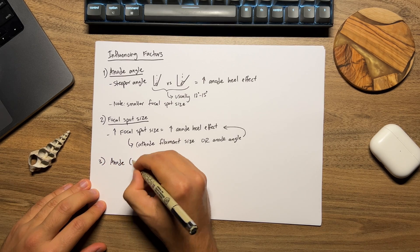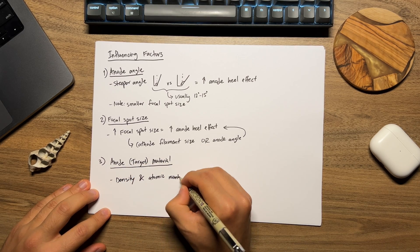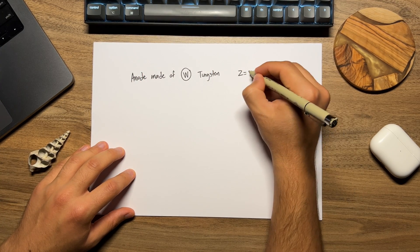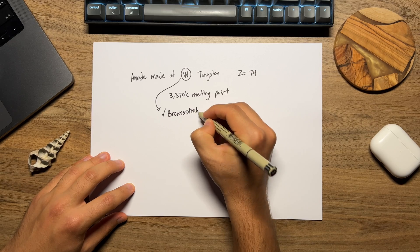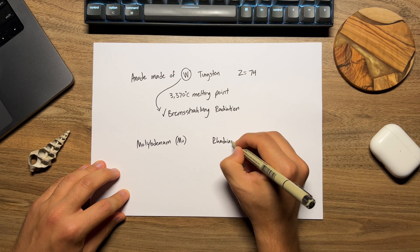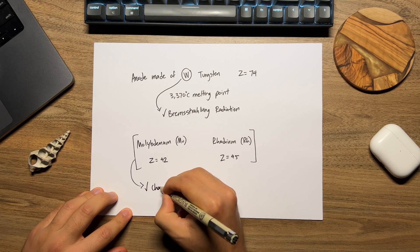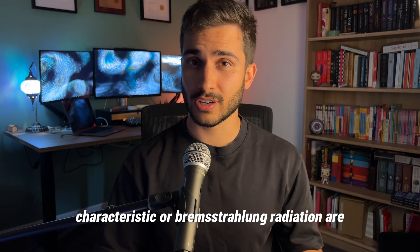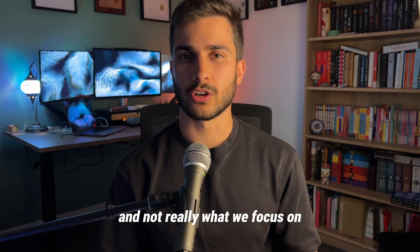The third thing that affects the anode heel effect is the target material — what the anode is made of. The density and atomic number of the anode material affects x-ray absorption. The anode is usually made of tungsten, which has an atomic number of 74 and a very high melting point of 3370 degrees, making it suitable for Bremsstrahlung radiation production. The anode can also be made of molybdenum and rhodium, with atomic numbers of 42 and 45 respectively, which are mainly used in mammography units as they're better at producing characteristic x-rays. This factor is relatively minor and not really what we focus on for the anode heel effect.